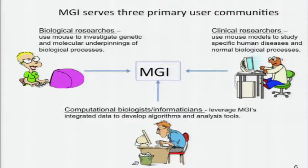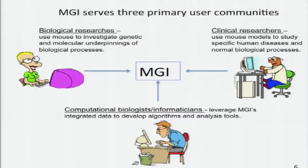MGI serves actually three different user communities, so we're a little bit schizophrenic in that way. We have biological researchers who are wet bench researchers investigating the underpinnings of biological processes in a very detailed way. We have clinical researchers who are using mouse as a model to study human disease and human biology. And we have computational biologists and informaticians who leverage our data to do lots of interesting things.